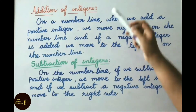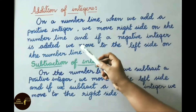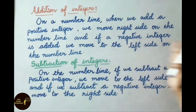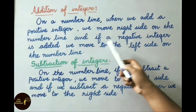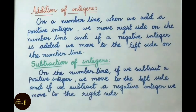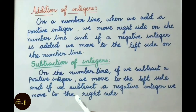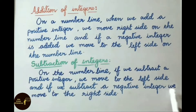Let us see addition and subtraction of integers on the number line. When we add a positive integer, we move to the right side; when a negative integer is added, we move to the left side. For subtraction: subtracting a positive integer means moving left, and subtracting a negative integer means moving right.